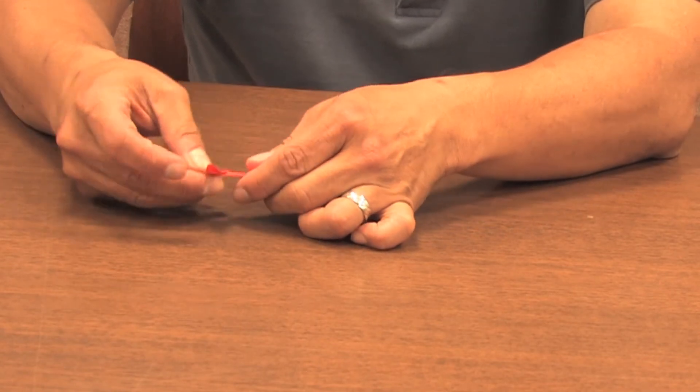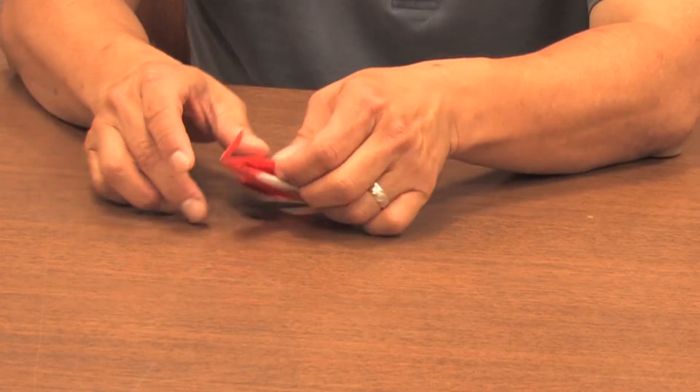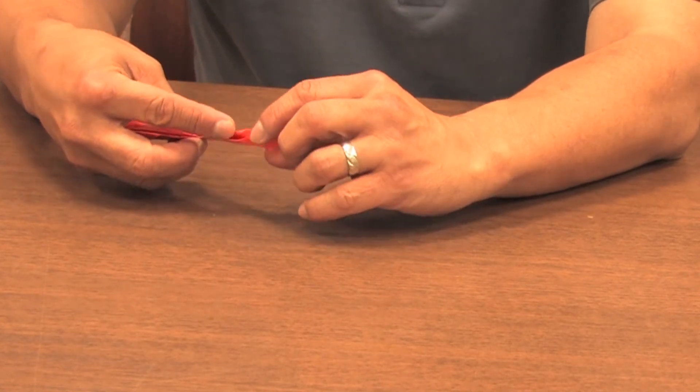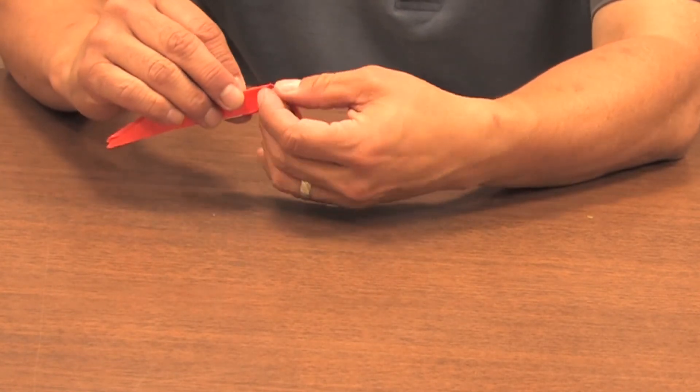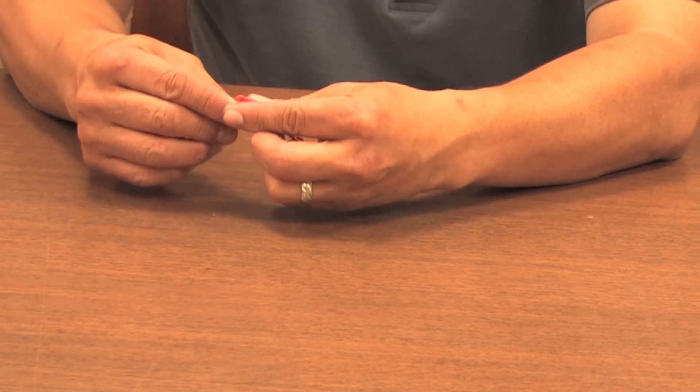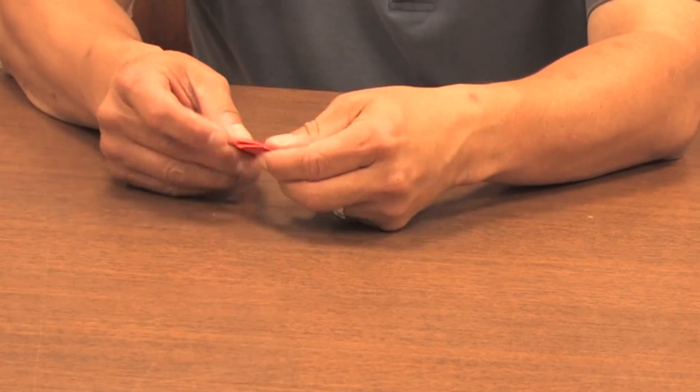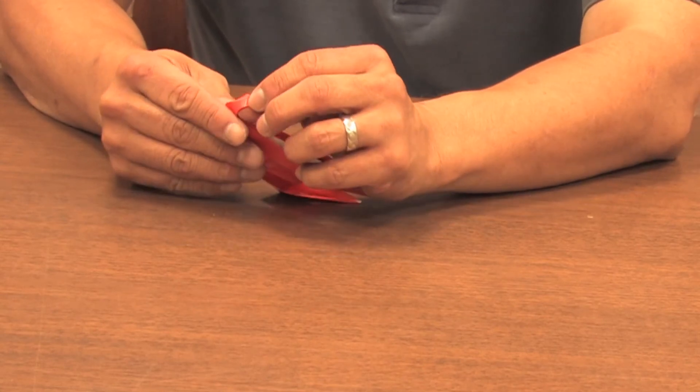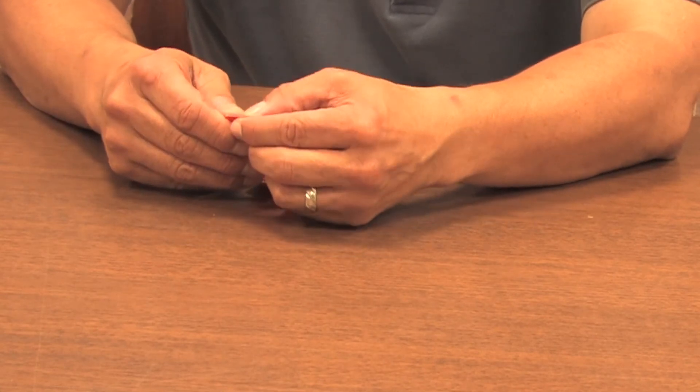So you just have the head going up at a slight angle, and then we're going to do a reverse outside fold like that. And then just give him a little bit of a nose here.